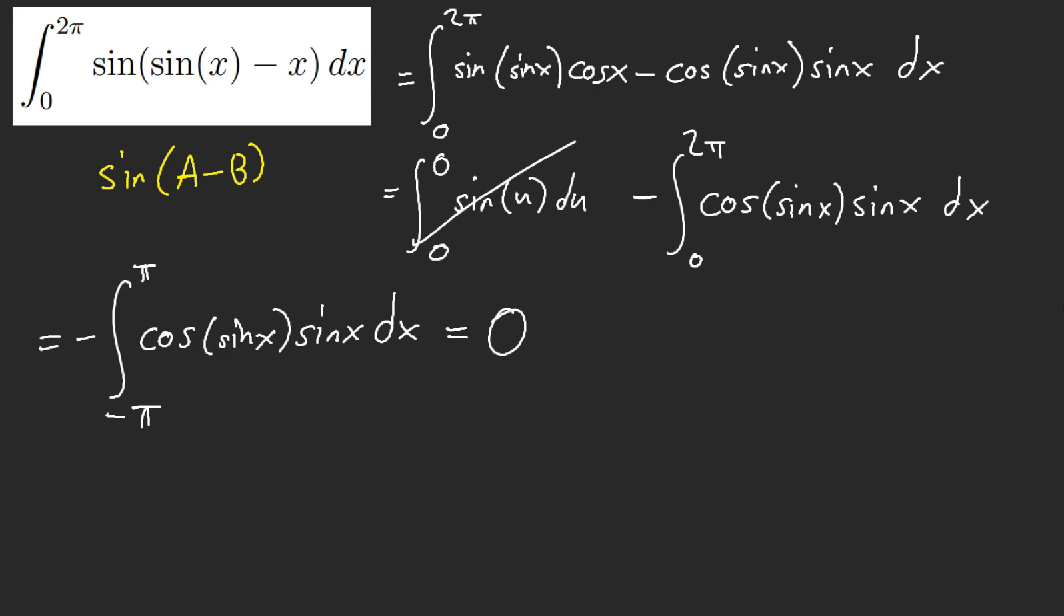And you're done. That's it. So here, u substitution equals to 0. Here, Queen's Rule equals to 0 by odd function symmetry. So our answer of this whole integral is just 0.